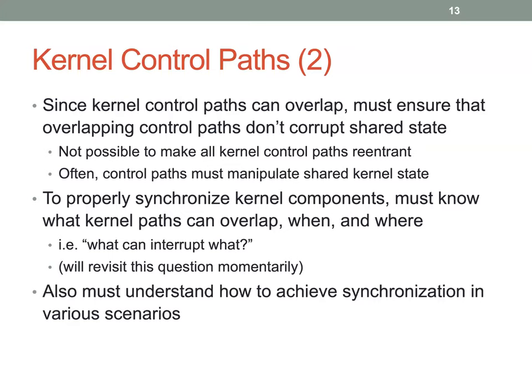We also need to understand how to achieve synchronization. You might think you can use mutexes and condition variables from your threaded programming experience, but you can't always use those mechanisms in the kernel — there are circumstances where they'll hang your OS. You have to understand the context of what you're doing and what can interrupt what. If you understand those things during implementation, you'll generally find it straightforward to resolve concurrency issues.